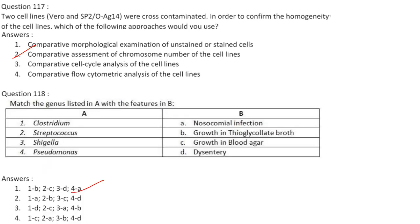Two cell lines VRO and Sp2/0-Ag14 were cross-contaminated. To confirm the homogeneity of the cell lines, comparative assessment of chromosome number would be used. Sp2/0-Ag14 chromosome number varies from 58 to 65 with modal class 61-62, while VRO chromosome number varies between 52 and 62 with modal chromosome number 59. Answer is option 2.